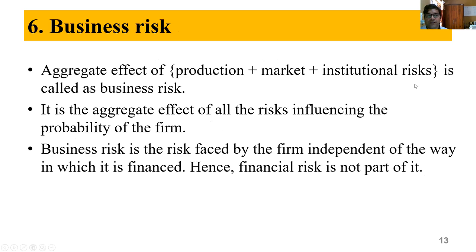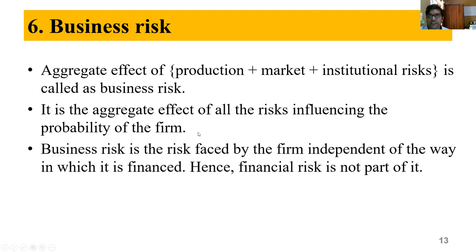Business risk is the aggregate effect of production, market, and institutional risks — all these influence the profitability of the firm. Business risk is the risk faced by the firm independent of the way in which it is financed. Financial risk is not part of business risk because it doesn't matter how the business is financed. That is why financial risk is separate — business risk is separate.